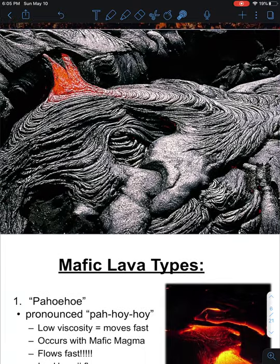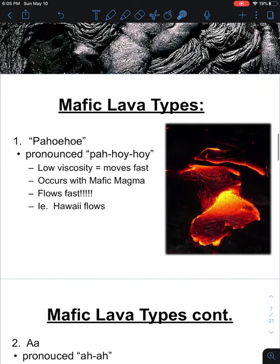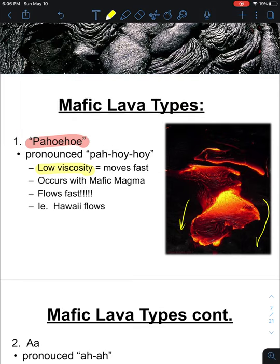That brings us to the two mafic lava types. The first is Pahoehoe — a tough one to pronounce — and this is a lava that has a low viscosity. Viscosity is a term that describes the resistance to flow. So Pahoehoe has a low resistance to flow, which means the lava moves fast as it flows downhill — just like water flows downhill. Water is the ultimate example of low viscosity, and Pahoehoe is another Hawaiian word for this type of fast-flowing mafic lava.